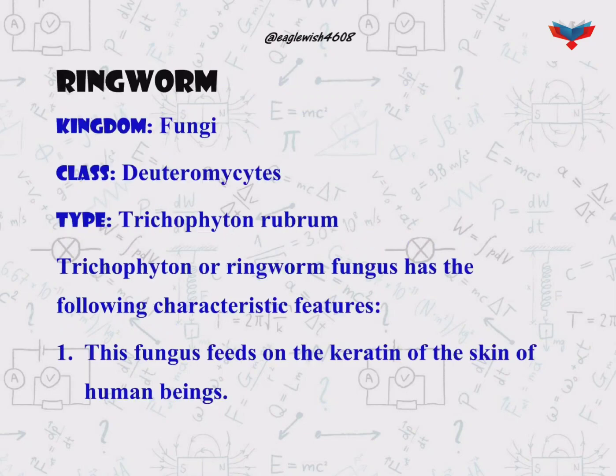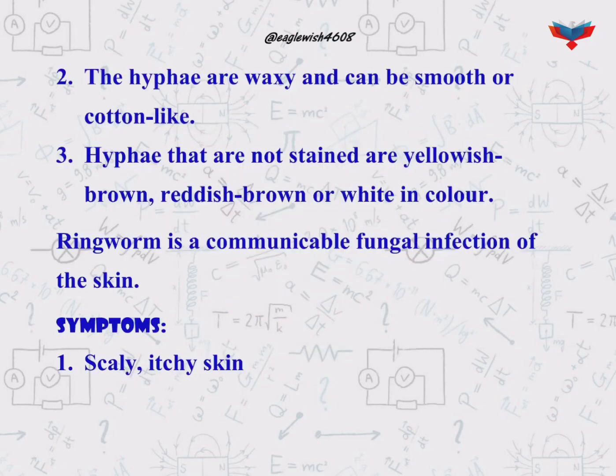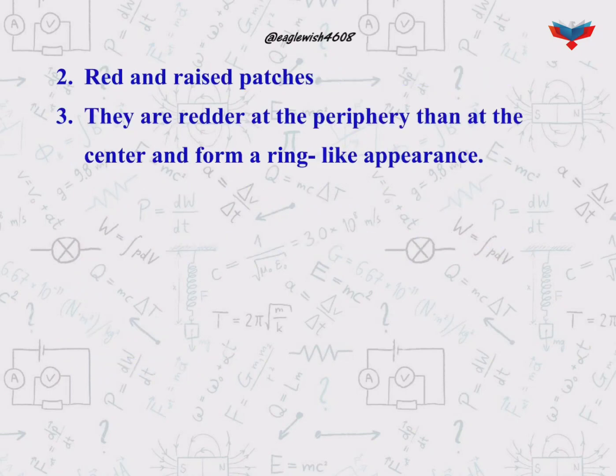Ringworm, specifically Trichophyton rubrum, which is a member of kingdom Fungi and class Deuteromycetes, causes fungal infection in the skin. The diagram here shows the Trichophyton rubrum. The symptoms of this infection are scaly, itchy skin, reddish patches, and a ring-like appearance.